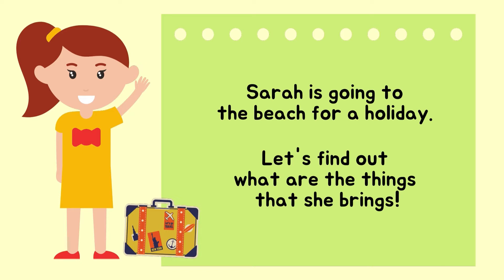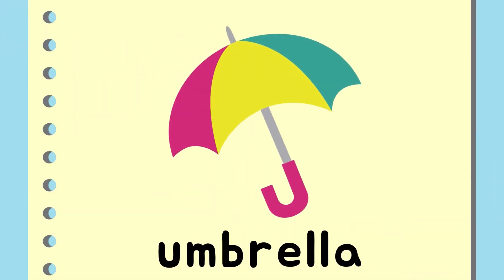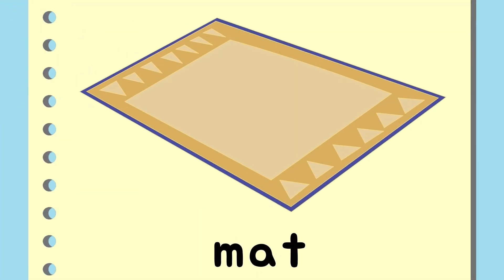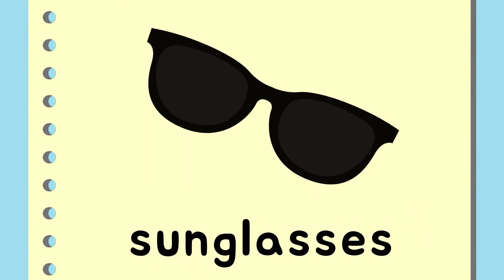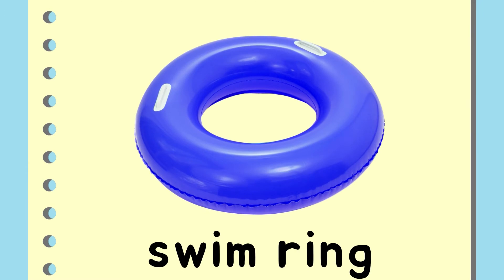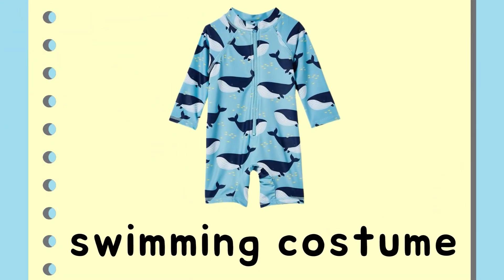I want you to say these words together with me. The first one: umbrella. The second one: mat. Next: sunglasses. Swim ring. Swimming costume.